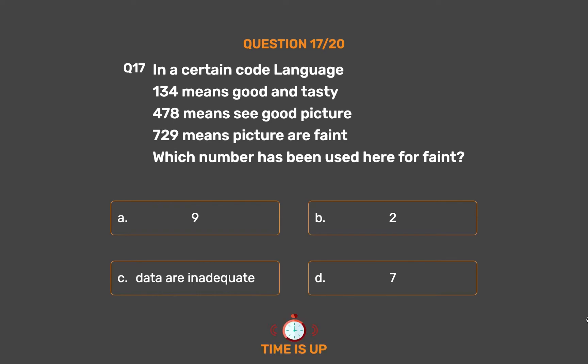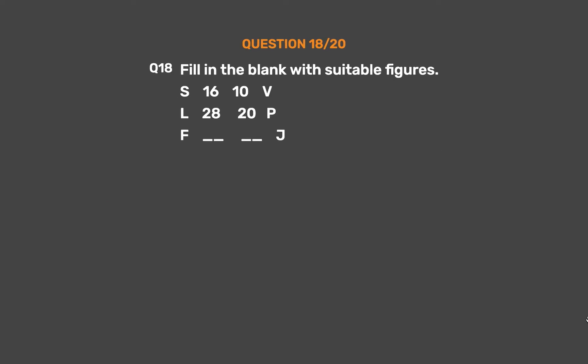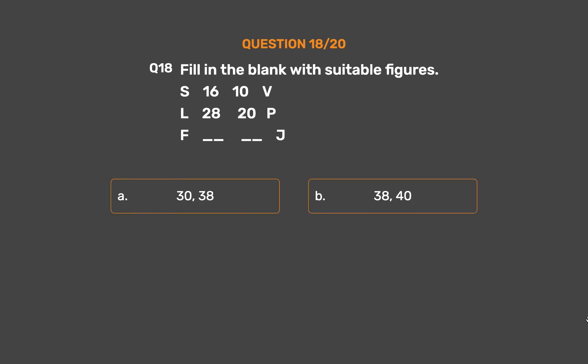The correct answer is Option C: data are inadequate. Question number 18: Fill in the blank with suitable figures: S 16 10 V L 28 20 P F __ __ J. Option A: 30, 38. Option B: 38, 40. Option C: 38, 30. Option D: 40, 32.